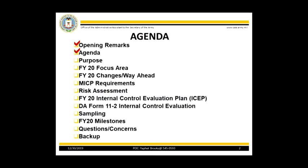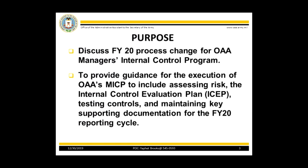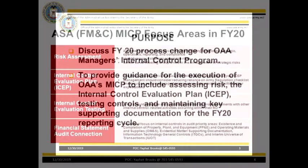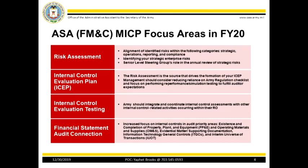The agenda will cover the following topics. The purpose of this workshop was to discuss the Assistant Secretary of the Army for Financial Management and Comptroller, or ASA-FMMC, requirements and OAA requirements for the FY20 reporting cycle. For FY20, ASA-FMMC MICP focus areas are the risk assessment. When identifying each strategic risk, consider the following questions: What are Army leadership's priority areas? What can go wrong in preventing the Army from achieving its objectives and mission? What are the threats or vulnerabilities to the Directorate's mission? What could cause reputational damage to the Army? What could impact Army's readiness? And the Internal Control Evaluation Plan, or ISEP.